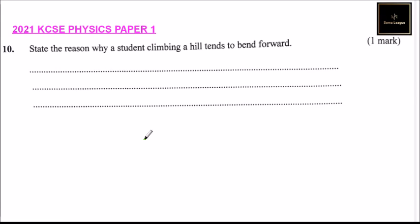Question number 10: State the reason why a student climbing a hill tends to bend forward. The reason is to shift the center of gravity to the front part to maintain equilibrium.